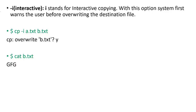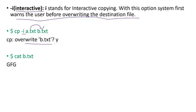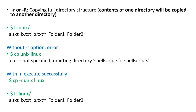Another option you can use with the cp command is the interactive option '-i'. With this option, cp first warns the user before overwriting the destination file. As mentioned, whenever you copy the contents of file A, it will be copied to file B, and before copying it is going to ask whether you want to overwrite. You can also use cp command with the '-r' or '-R' option, which copies the contents of one directory into another directory.